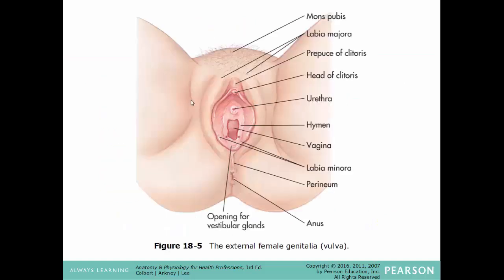Here we have an image of the external female genitalia — the vulva. The rounded fat tissue is the mons pubis where pubic hair is found. The larger folds are the labia majora; the thinner structures are the labia minora, which fuse right on top of where the clitoris is located. Just below the clitoris is the urethral opening, followed by the vaginal opening, and then the perineum — the space between the vulva and the anus.